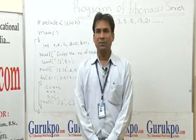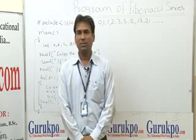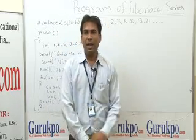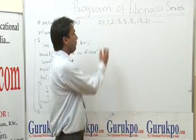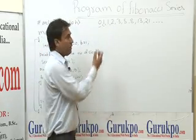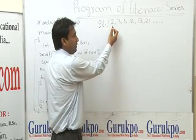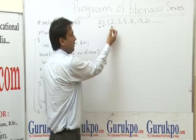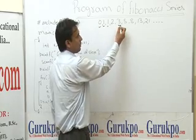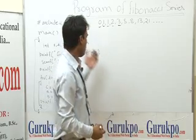The Fibonacci series are numbers in the following integer sequence. In this series, the first two numbers in the Fibonacci sequence are zero and one, and each subsequent number is the sum of the previous two. Starting with zero and one, the next number is the addition of zero and one which gives one. Again, the next number is the addition of one and one, that is two. And three is the addition of one and two — the sum of the previous two numbers.